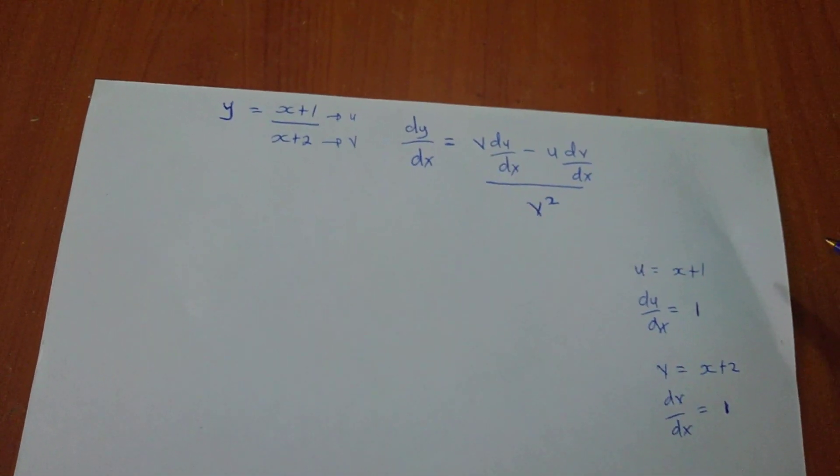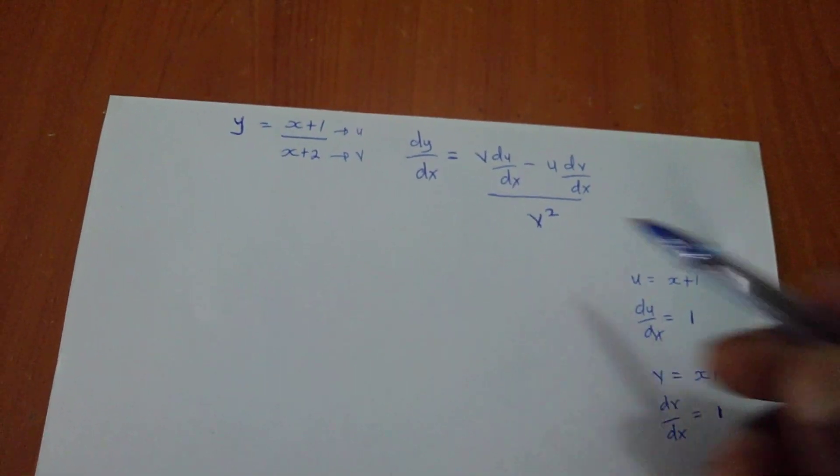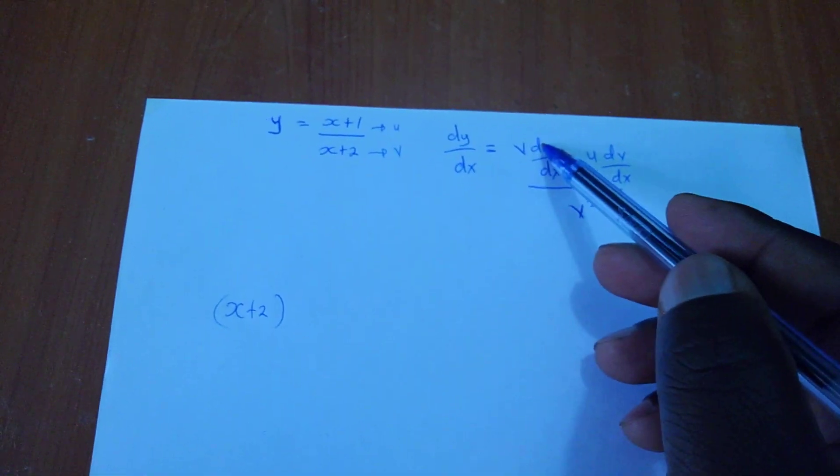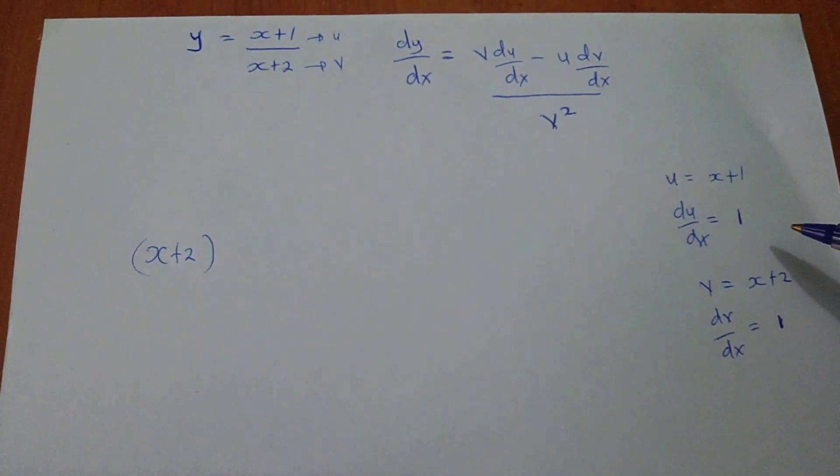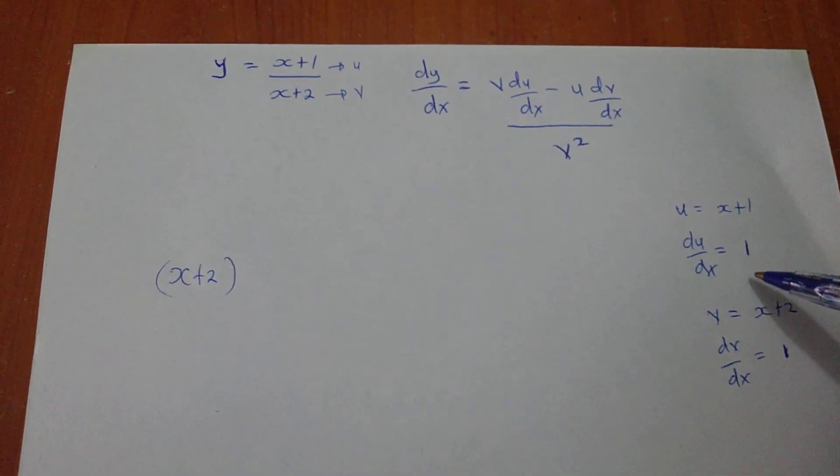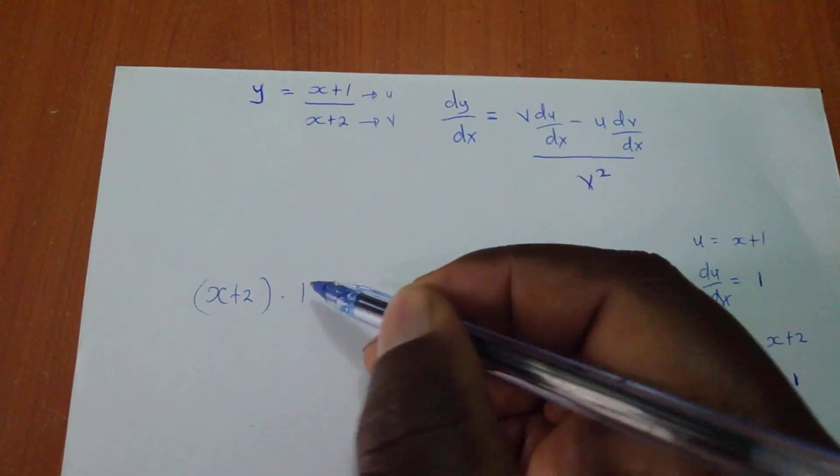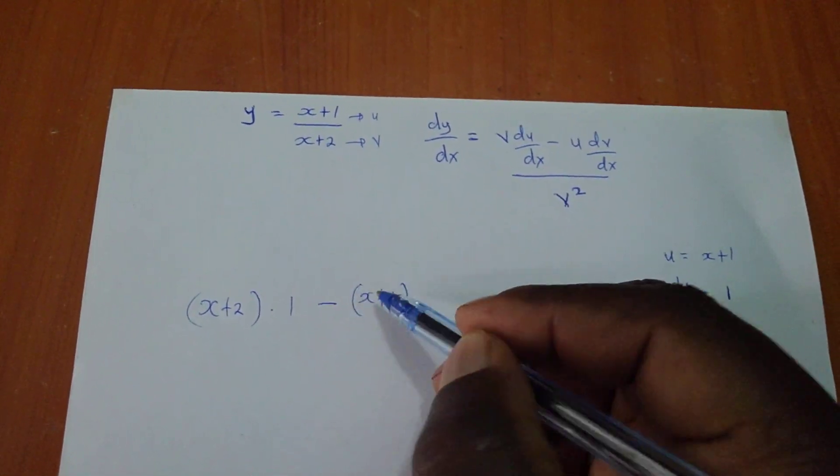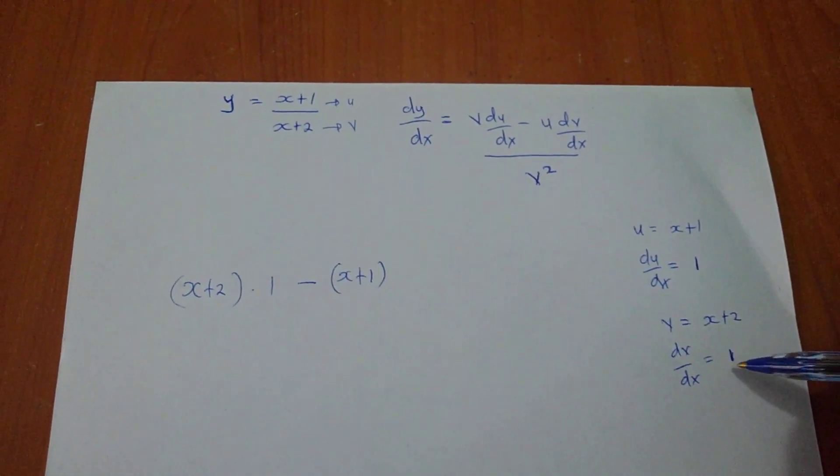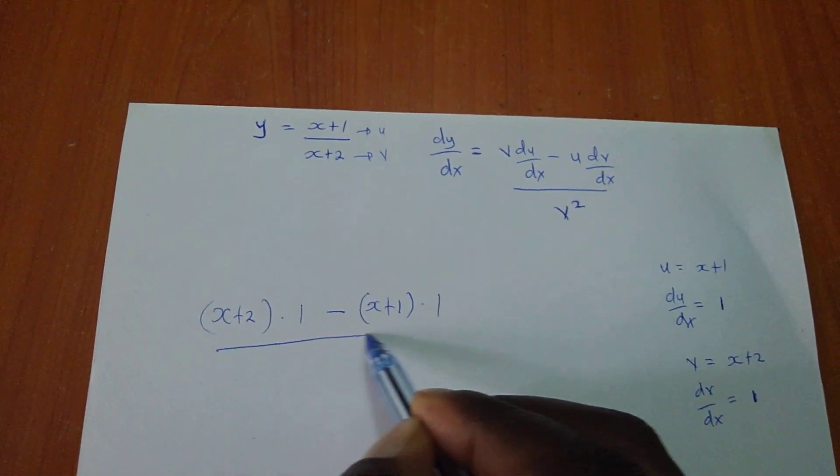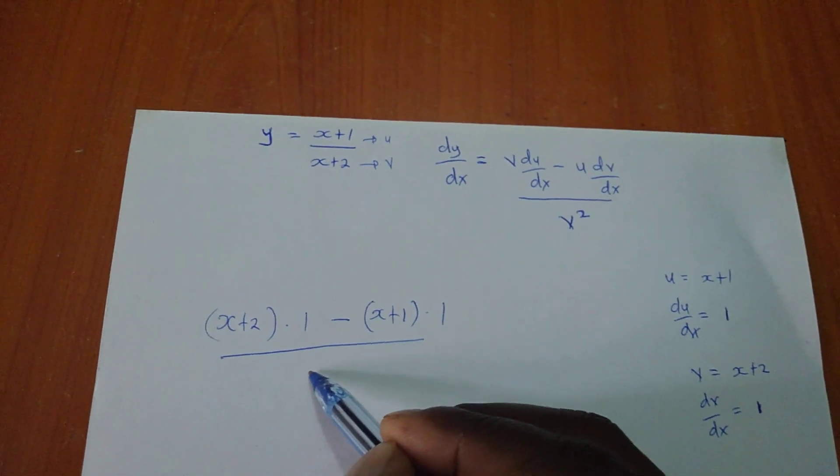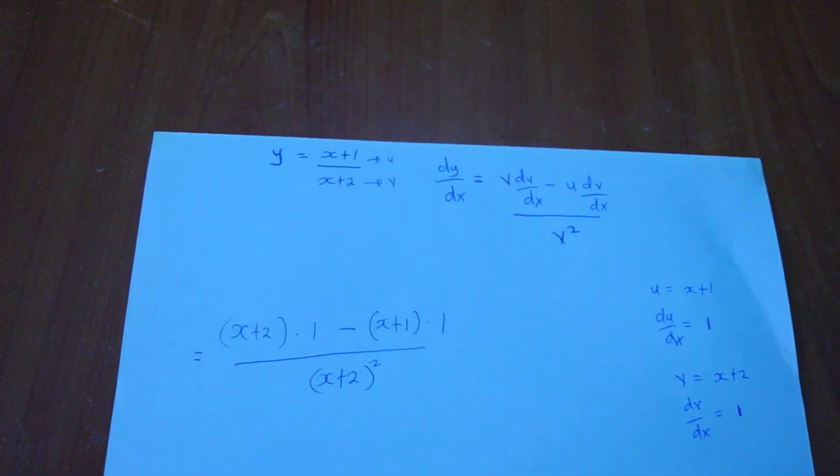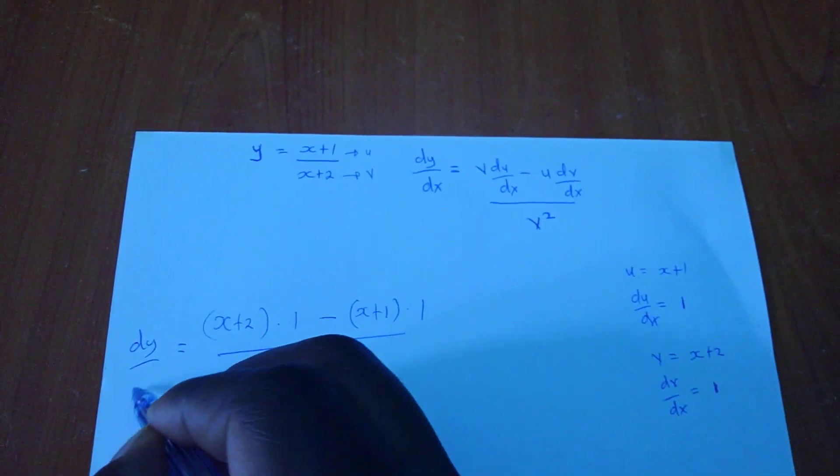So, putting in our formula what we already have. Remember, I have my v as x plus 2. The formula - my du/dx is 1, so times 1. Then minus, from the formula, what is my u? x plus 1. What is my dv/dx? It is also times 1, all over v squared. So, it will be x plus 2 squared. Don't forget. So, this will be my dy/dx.